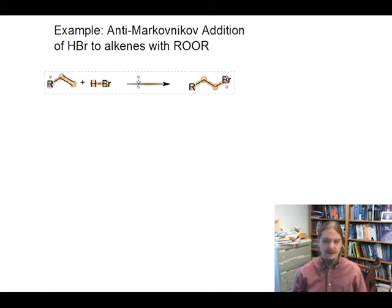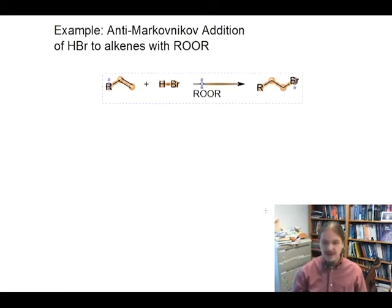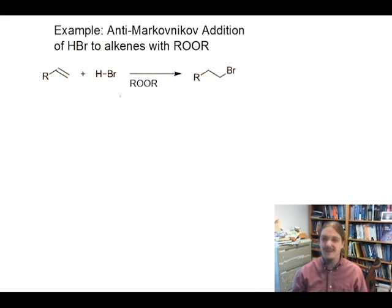I'm going to put peroxides over here under the reaction arrow. The reason I'm doing this is because the alkene and the hydrogen bromide are part of the balanced chemical equation, and the peroxide is not. It's an initiator, not necessarily part of the key bond forming steps.